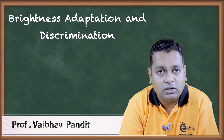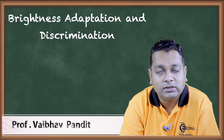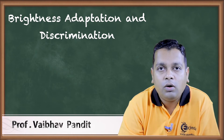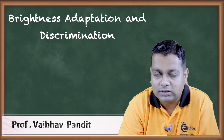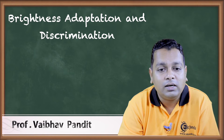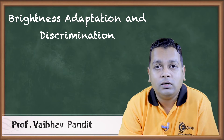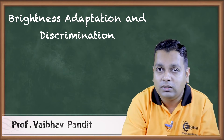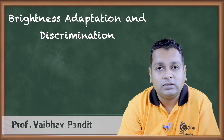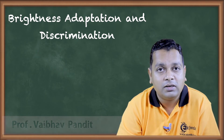We have completed the first two elements, and now it is time for the third: brightness adaptation and discrimination. If illumination changes, the human eye adapts to those brightness changes — that is brightness adaptation. How the eye discriminates between one intensity level and another is the discrimination part of this topic.